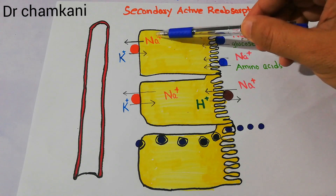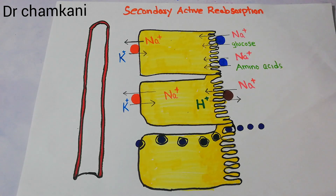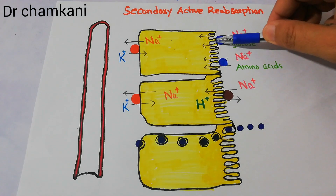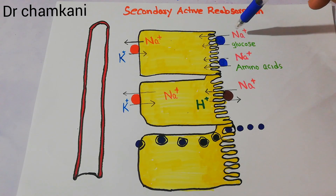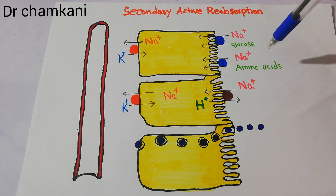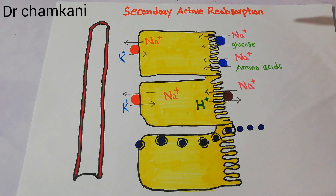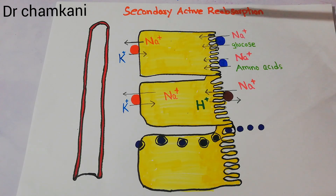Because sodium is thrown out of the cells of the proximal tubule by this pump, a deficiency of sodium is generated inside the cell. Due to this deficiency, sodium in the tubular lumen has a chance to enter inside the cells with the help of carrier proteins. As sodium tries to enter into the cells, the energy used by sodium to enter is utilized by glucose and other substances like amino acids to also take entry into the cells of the proximal tubule. The absorption of glucose and amino acids with the help of energy generated by the movement of sodium is the secondary active reabsorption.